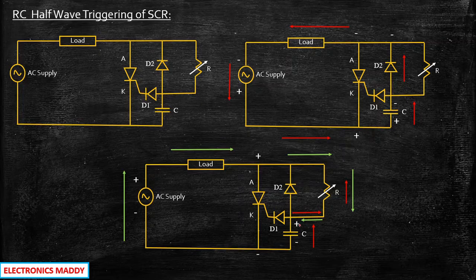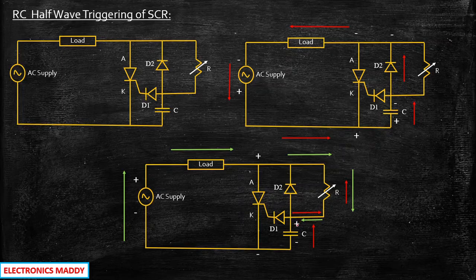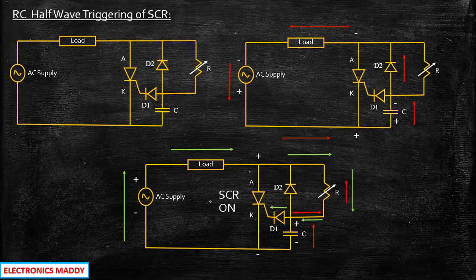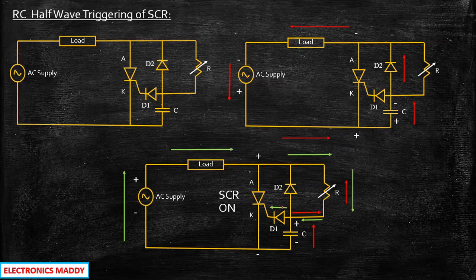The capacitor now charges with a polarity of plus and minus — previously it was minus and plus and had discharged its energy. It is now charging with the opposite polarity because minus is appearing at one side and positive voltage at the other. Because of this positive voltage, diode D1 will be forward biased — positive is connected to the anode of D1. Because of that, current starts flowing through D1 and into the gate of the SCR, turning it on. The SCR moves from forward blocking mode to forward conduction mode.